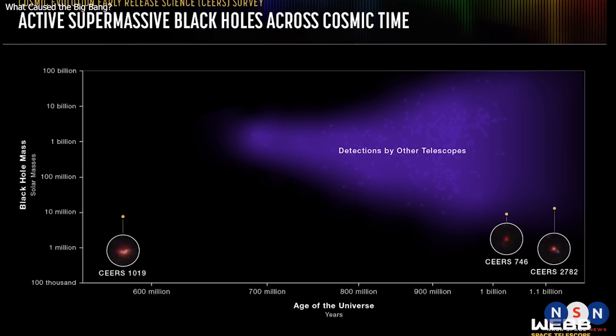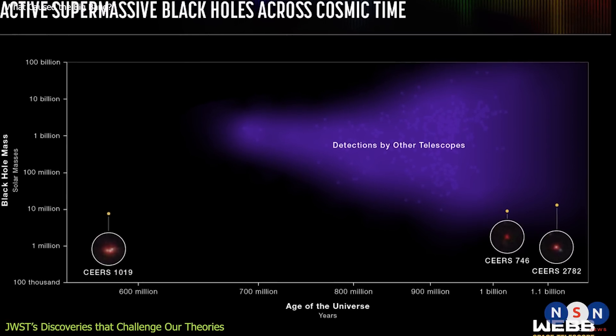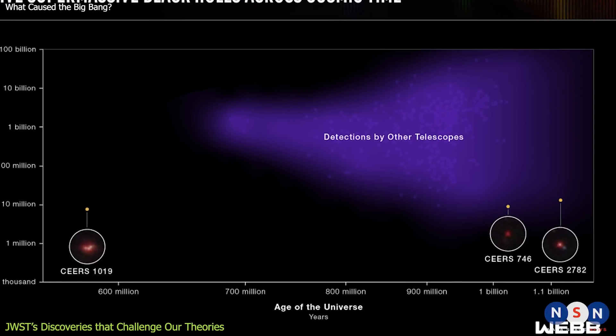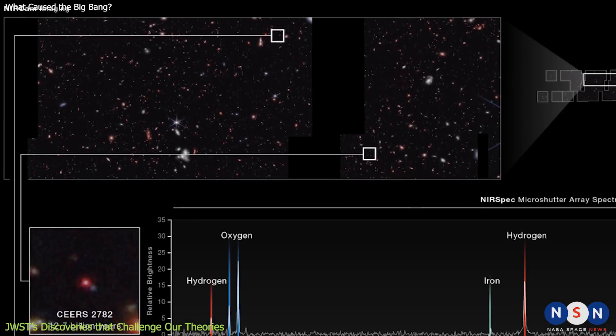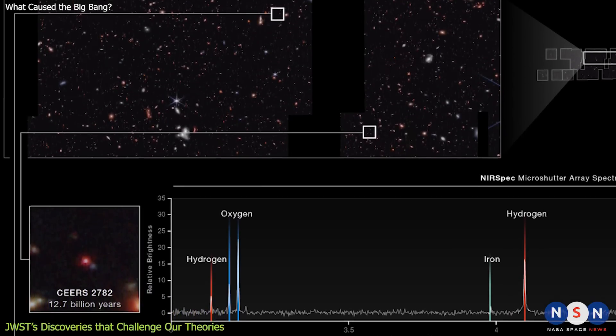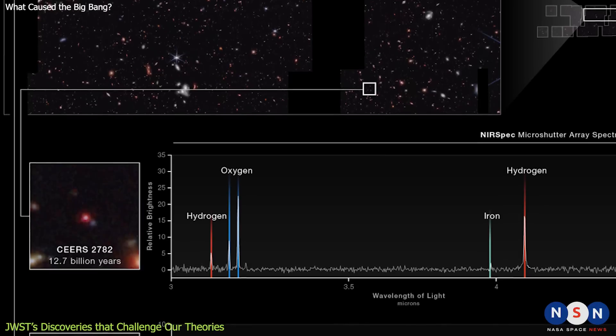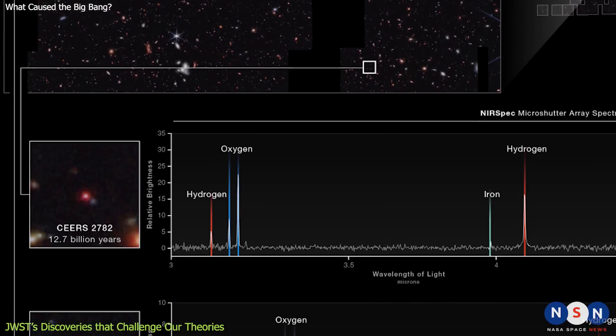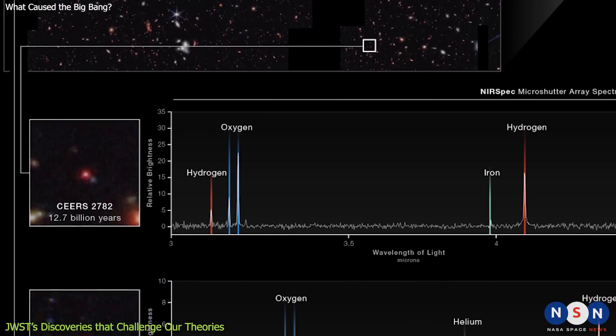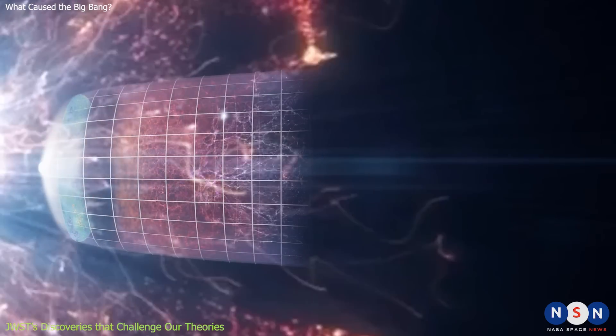One of the most amazing discoveries made by James Webb is the most distant supermassive black hole ever detected. This black hole is so far away that its light took 13.4 billion years to reach us, which means we are seeing it as it was when the universe was only 670 million years old. That's less than 5% of its current age.